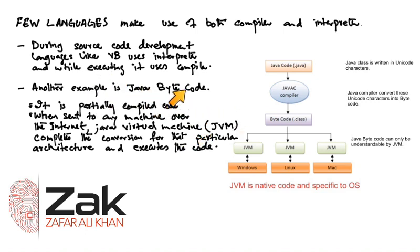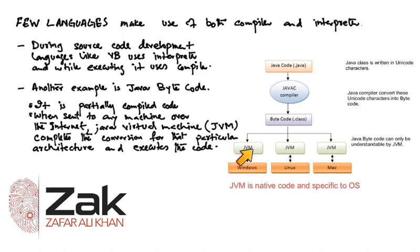So another example is Java bytecode — it is partially compiled code. When sent to any machine over the internet, the Java Virtual Machine completes the conversion for that particular architecture and executes the code. Remember, JVM interprets the program — it does not compile it further. JVM is actually a program made by the Java company for every single computer in the world which has a different architecture.